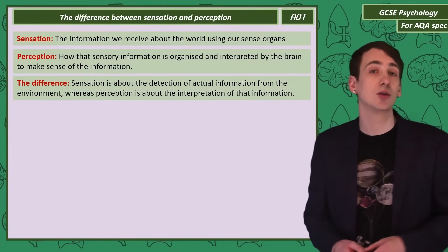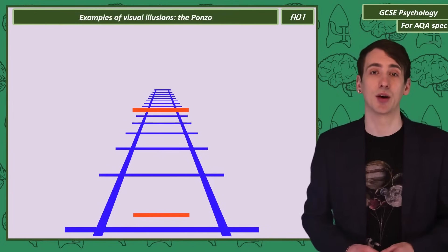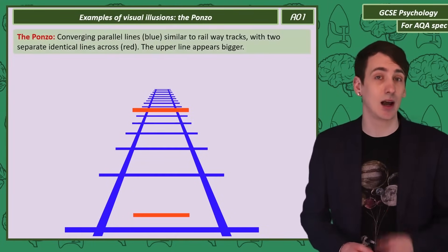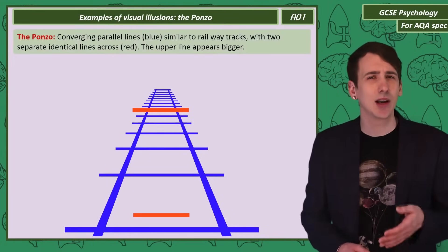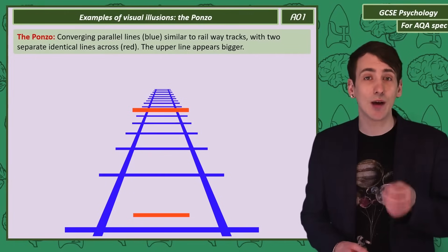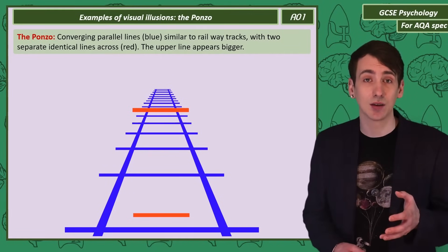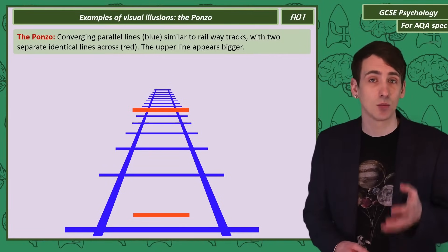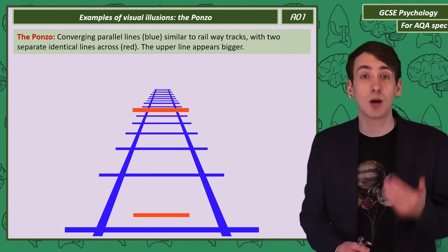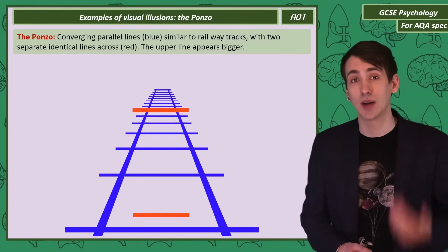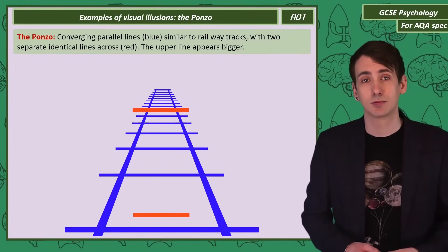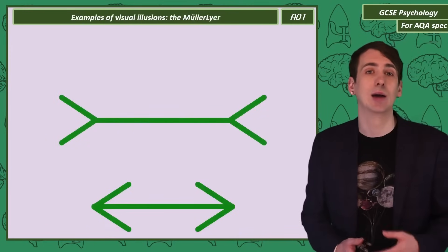Let's look at the visual illusions, starting with the Ponzo. This is a pair of converging parallel lines that look a little bit like a railway track. Both of the red lines are the same size, but one at the top appears bigger. To show you, I'll move the top one down.